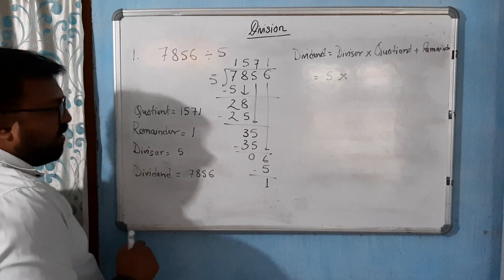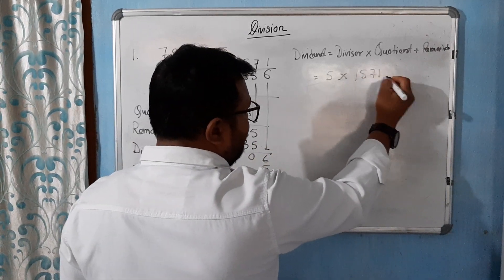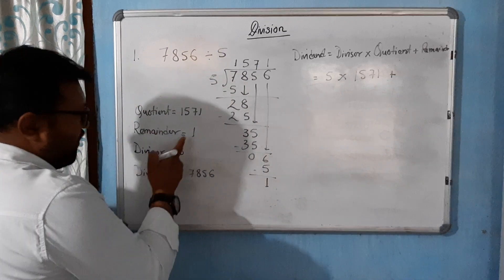So we will write 5 into quotient equal to how much? It is 1571. We will write 1571 plus remainder equal to how much? It is 1.